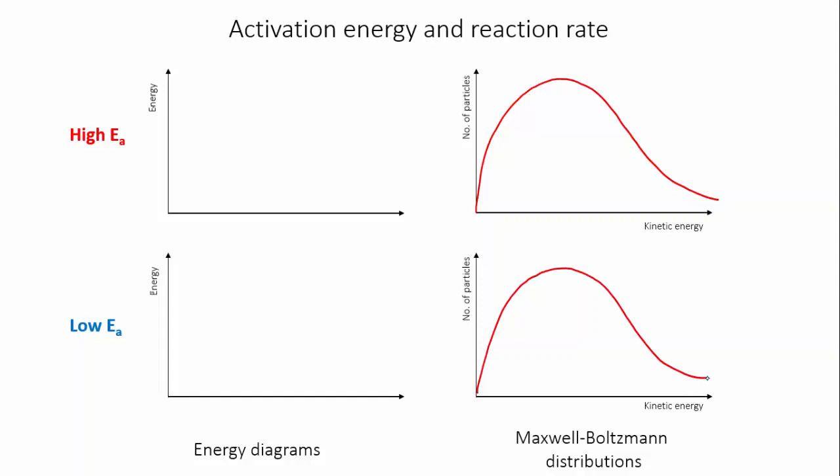In the first flask, I'm going to mix up the reactant with something else, and it's going to undergo some reaction which happens to have a very high activation energy. So the energy diagram for this reaction could look like this. And on the Maxwell-Boltzmann distribution, the activation energy would be up here somewhere.